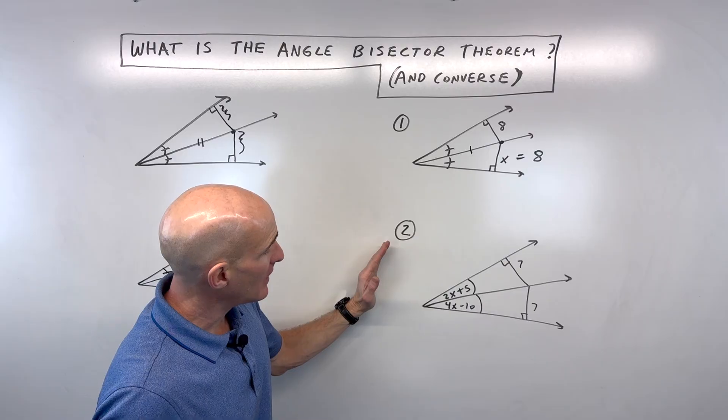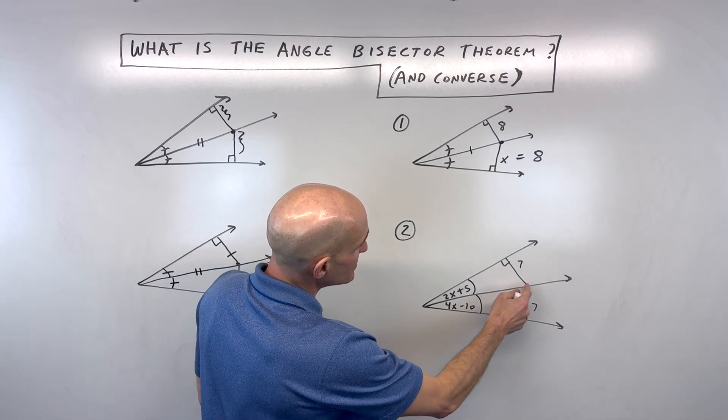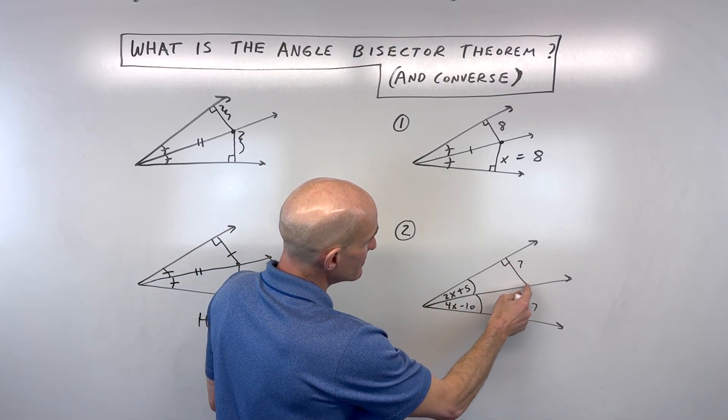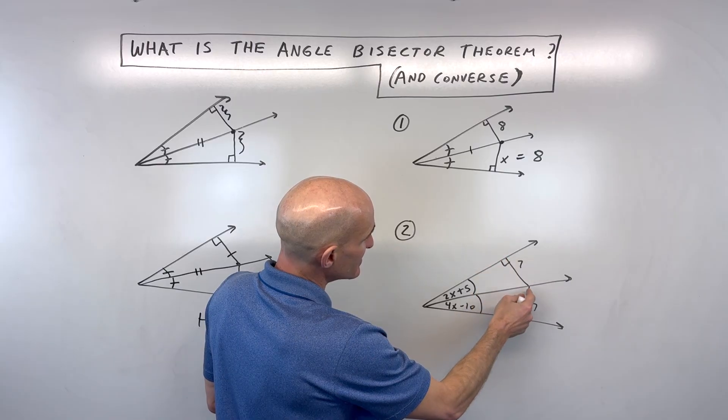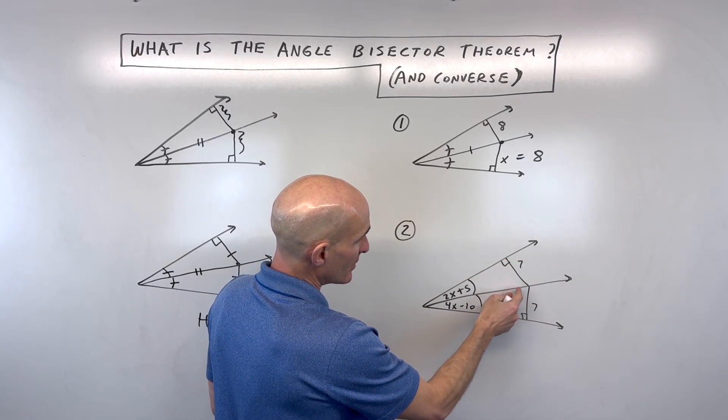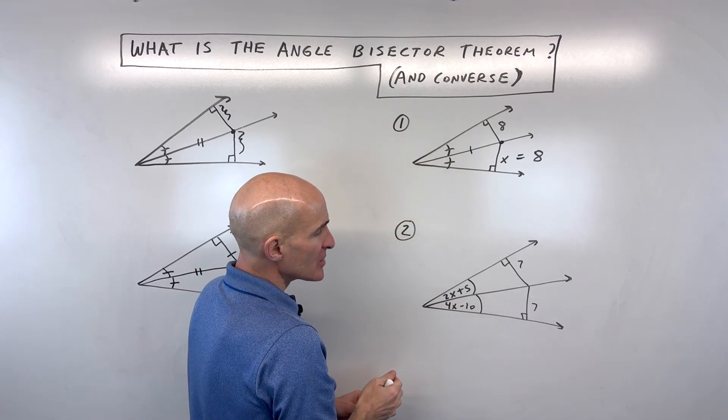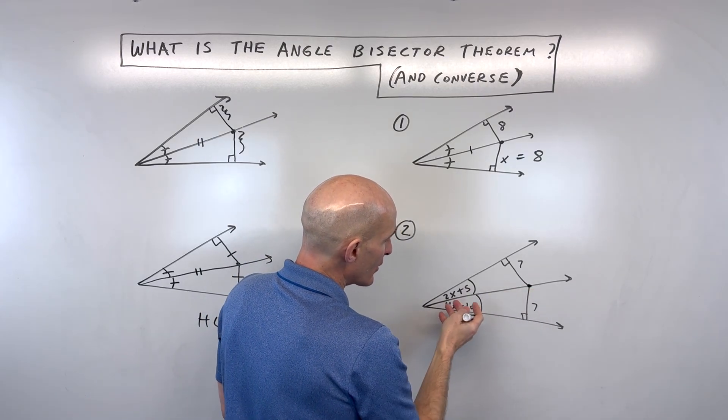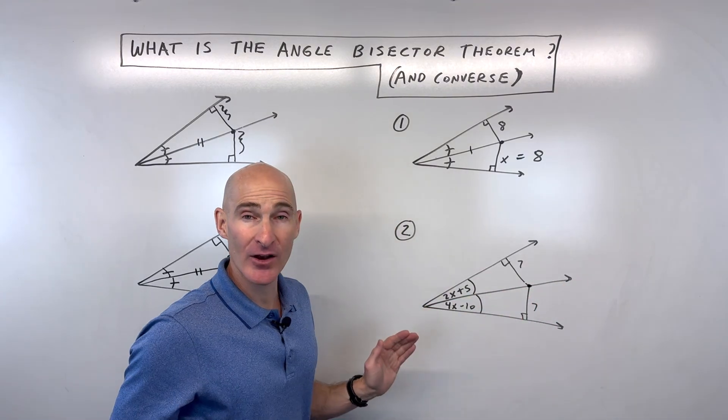For number two now, a little bit different. Here they show us that the perpendicular distance from this point to the side, and this point to the side of the angle, they're congruent, okay? They're equal, and see they're at right angles. So what does that tell me about this point right here? It lies on the angle bisector.